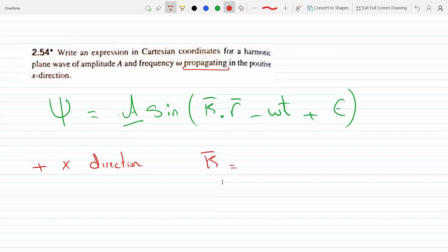So they're telling you indirectly that this needs to be in the i direction, and there's no j or k for this.